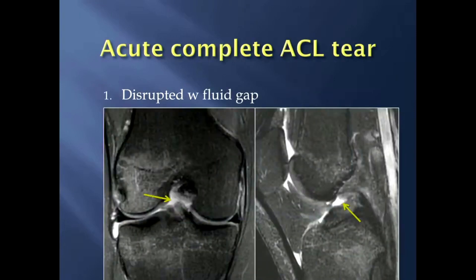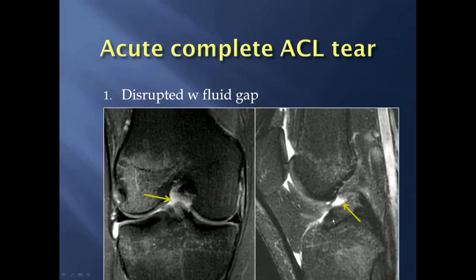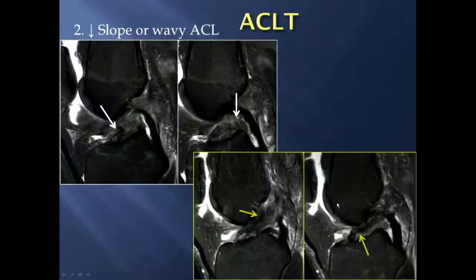Going through each of those — starting with the first, a disrupted ACL with a fluid gap. Notice here on this coronal image you have fluid signal, and on this sagittal image, looking from the tibial attachment of the ACL heading up, it should have a taut appearance going straight up to its attachment site. This fluid gap here indicates a complete ACL tear.